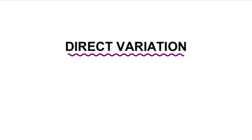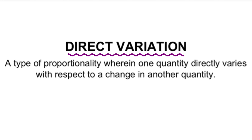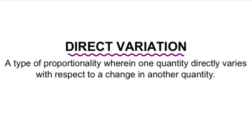By definition, direct variation is a type of proportionality wherein one quantity directly varies with respect to a change in another quantity. To better understand this, let's look at variable A and variable B.